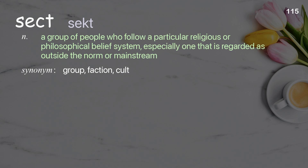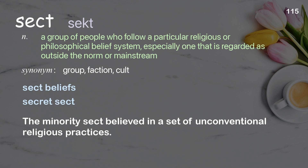Sect: a group of people who follow a particular religious or philosophical belief system, especially one that is regarded as outside the norm or mainstream. Examples: sect beliefs, secret sect. The minority sect believed in a set of unconventional religious practices.